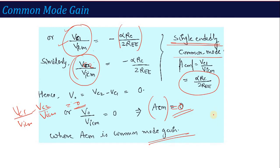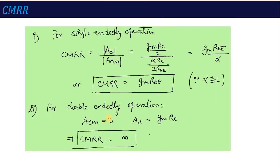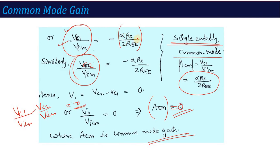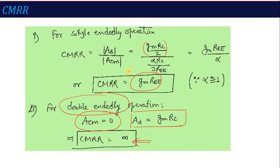If the common mode gain is zero, and CMRR is defined as the ratio of AD to ACM, then for double-ended operation, CMRR is infinite. For single-ended operation, AD equals GM times RC divided by 2, and ACM equals alpha RC divided by 2REE. Dividing these gives the CMRR for single-ended operation. Since alpha is approximately equal to 1 — as we derived in the common base amplifier — the value of CMRR simplifies to GM into REE. To solve a CMRR problem, you need to know the differential gain and the common mode gain, then calculate CMRR for both single-ended and double-ended operation.